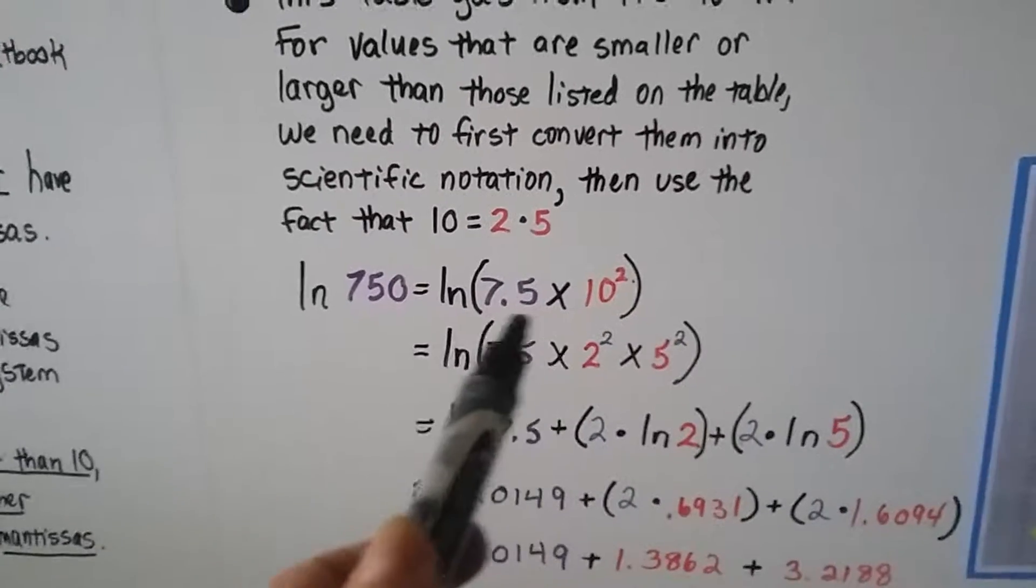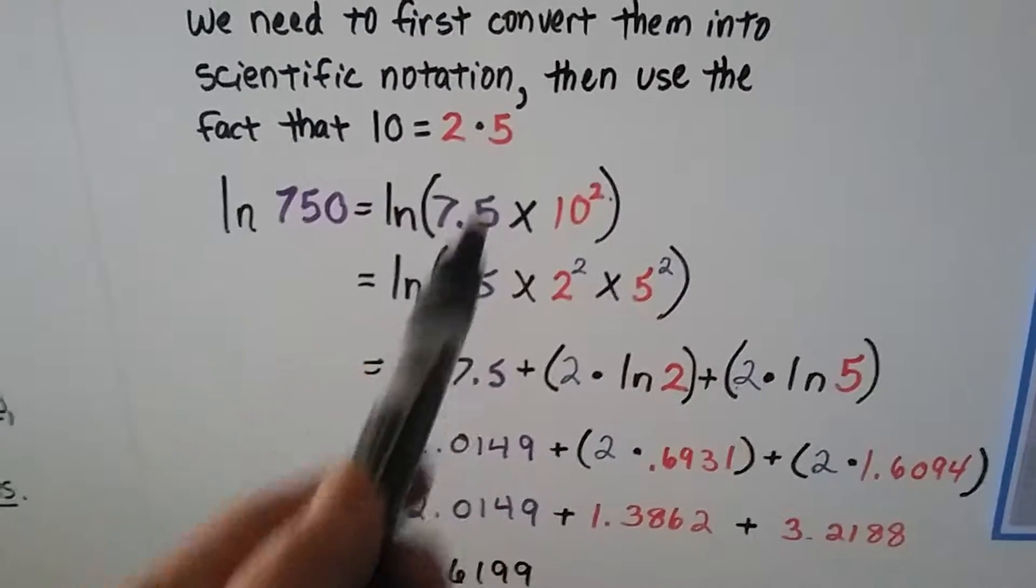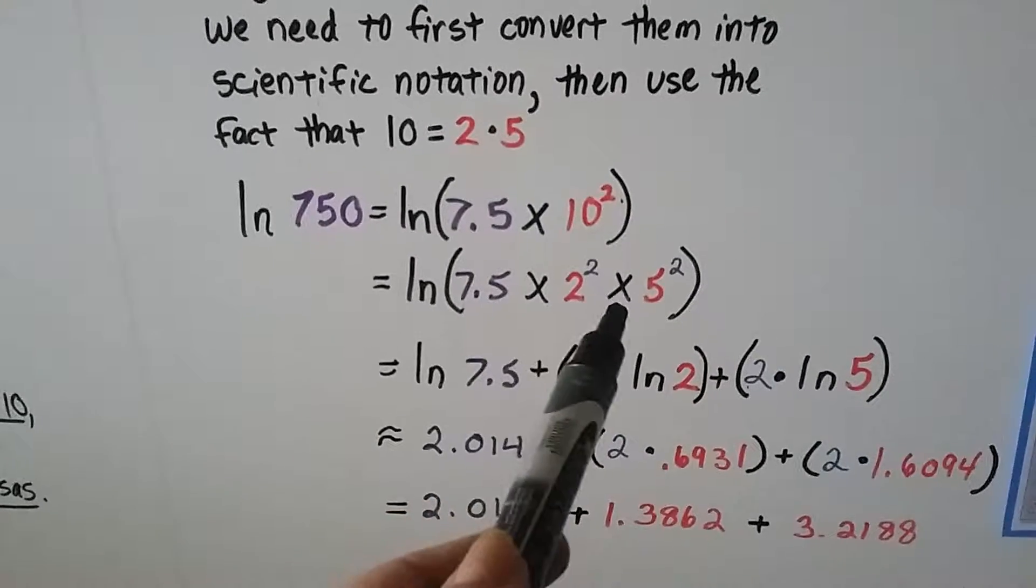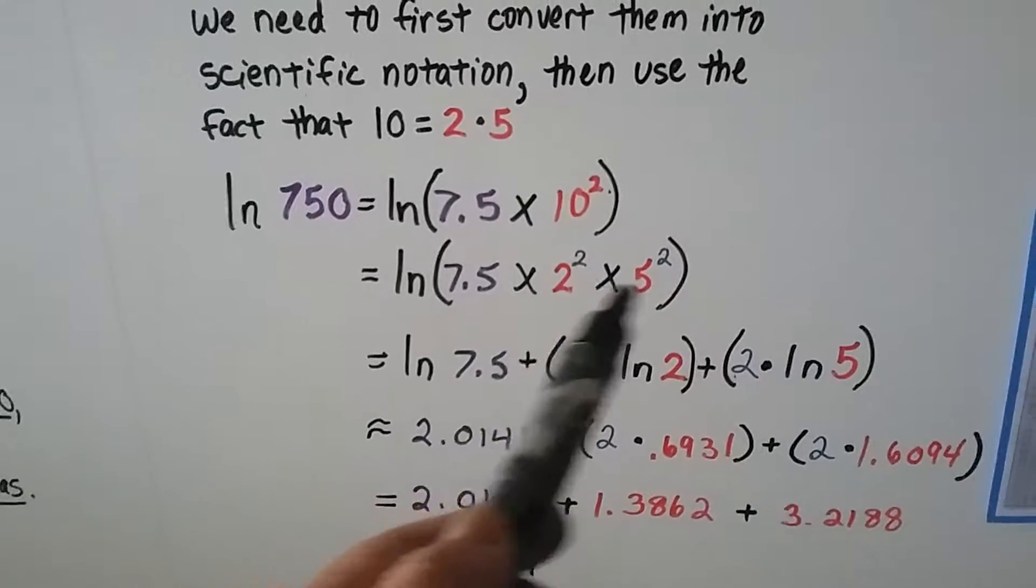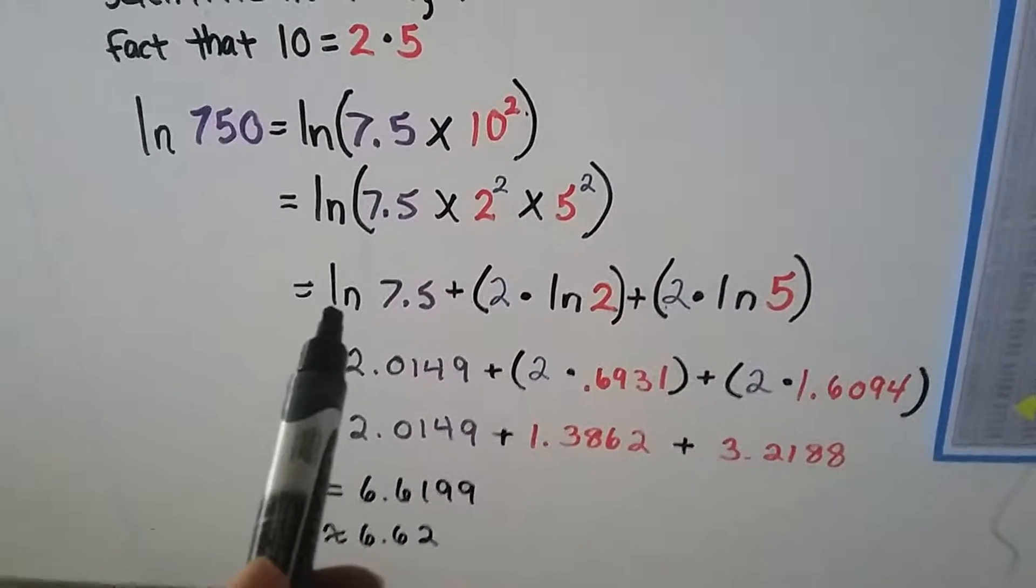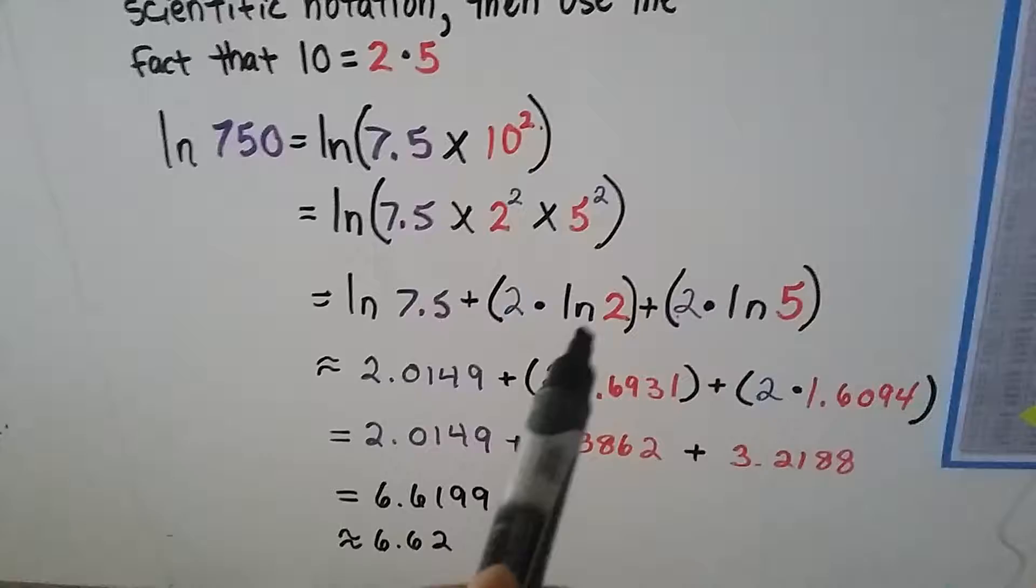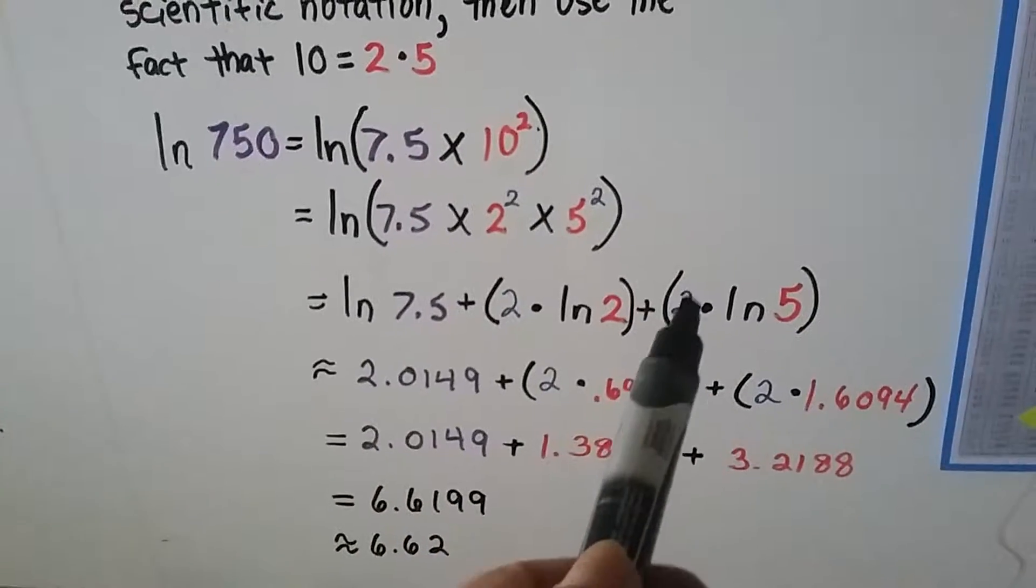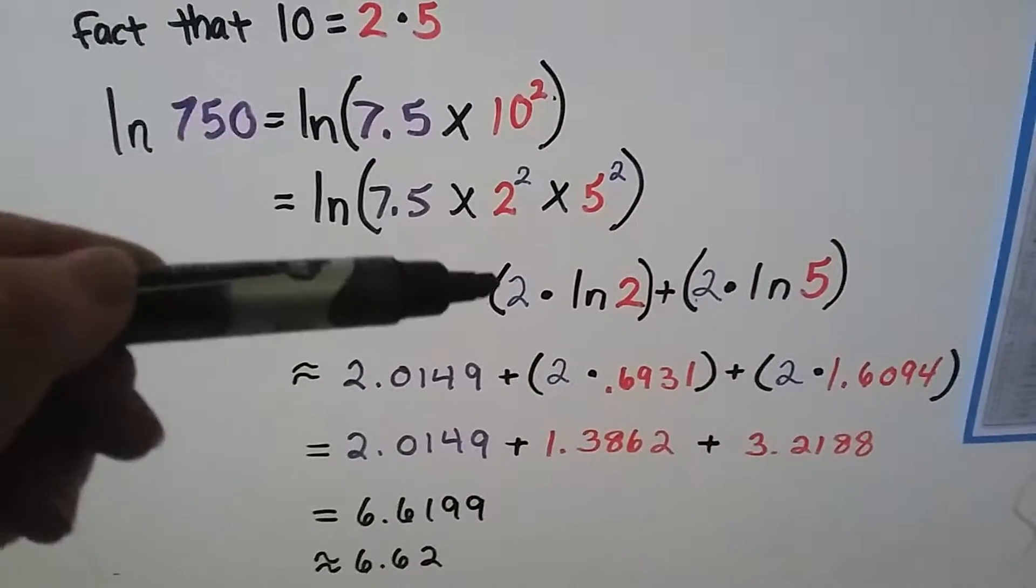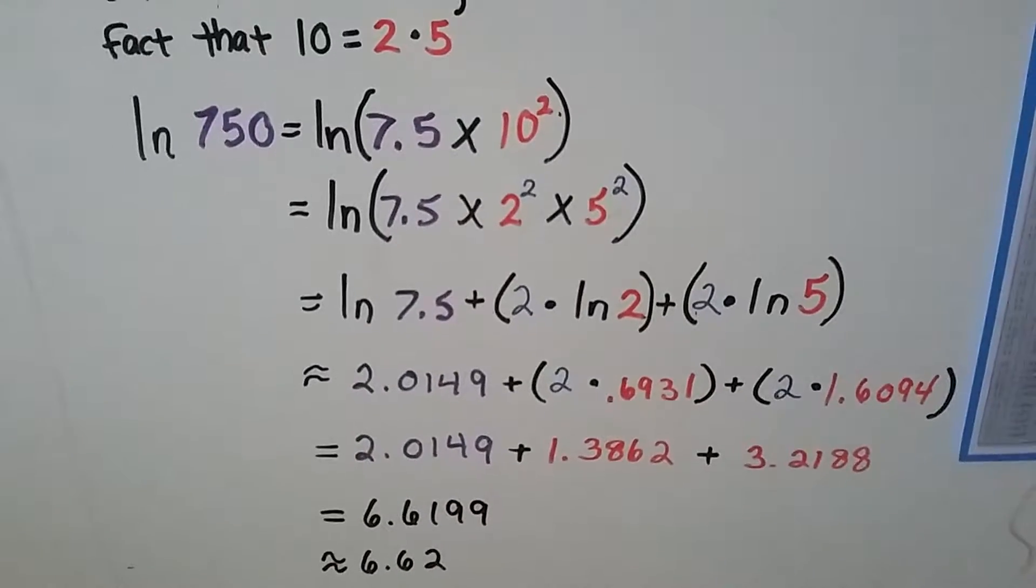If we need to find the natural logarithm of 750, we write it in scientific notation. We do 7.5 times 10 to the second power. When we break it into the 2 and the 5, it's the natural logarithm of 7.5 times 2 to the second power times 5 to the second power, because that would be 4 times 25, which is 100. What we're going to do now is put the natural logarithm of 7.5 and add it to 2 times the natural log of 2, and add it to 2 times the natural log of 5. That exponent 2 is where I'm getting that multiplying it by 2. It's because of the exponent.